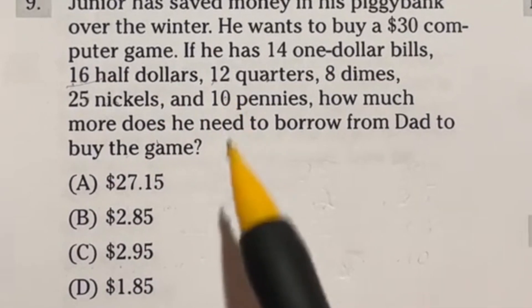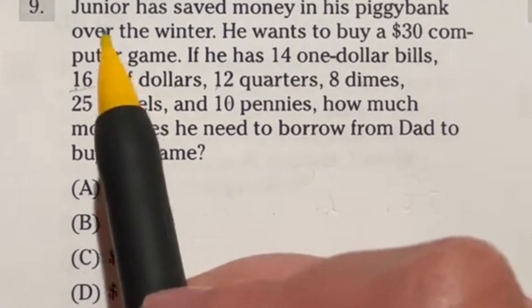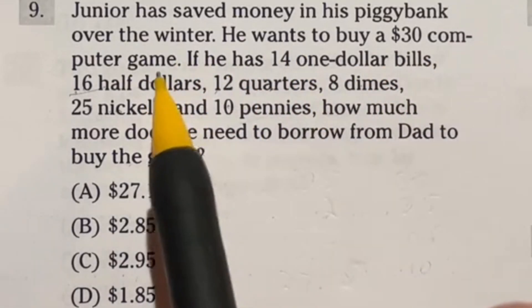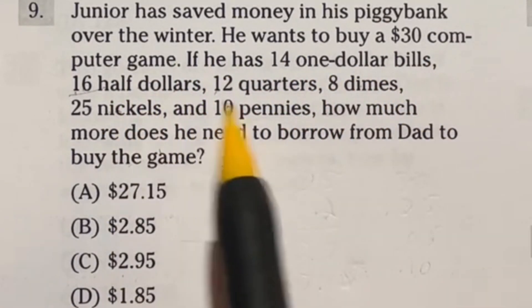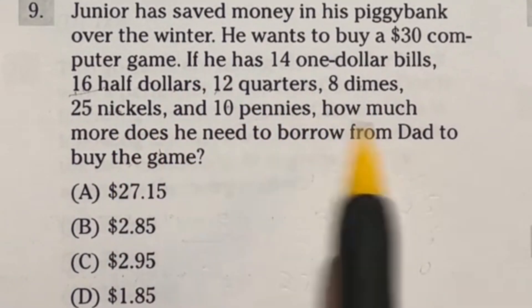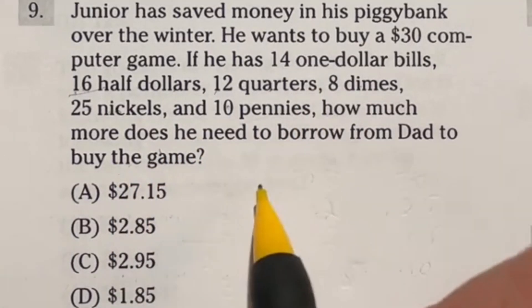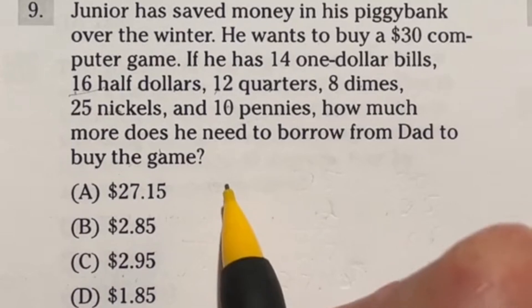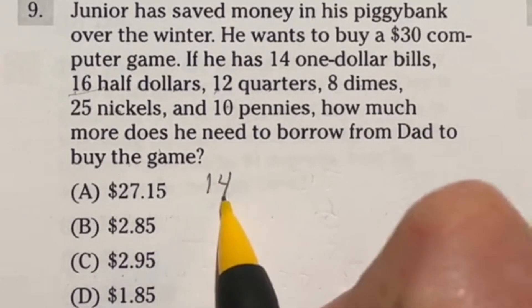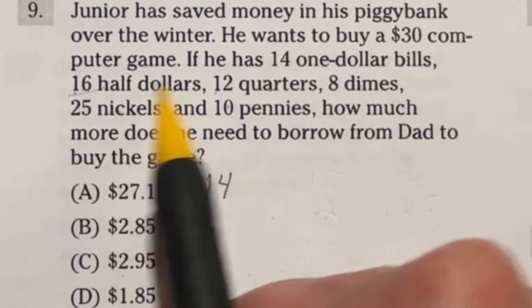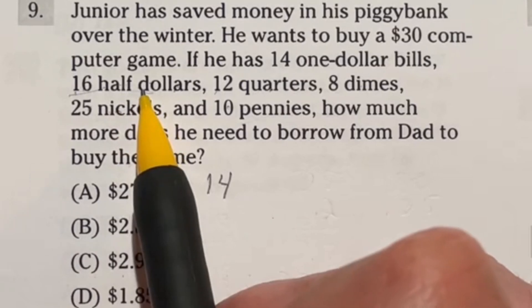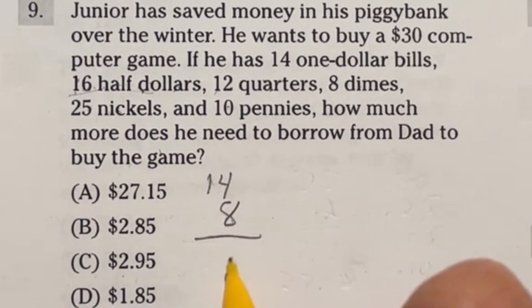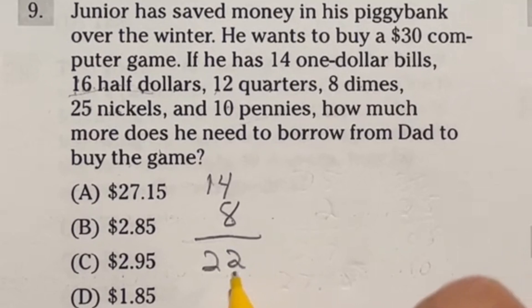Number nine requires running a tally. Junior saved money in his piggy bank and wants to buy a $30 computer game. He has 14 one-dollar bills, 16 half dollars, 12 quarters, 8 dimes, 25 nickels, and 10 pennies. How much more does he need to borrow from dad? Starting with $14, then 16 half dollars: two make a dollar, so 16 divided by 2 is 8, giving us $22 total.